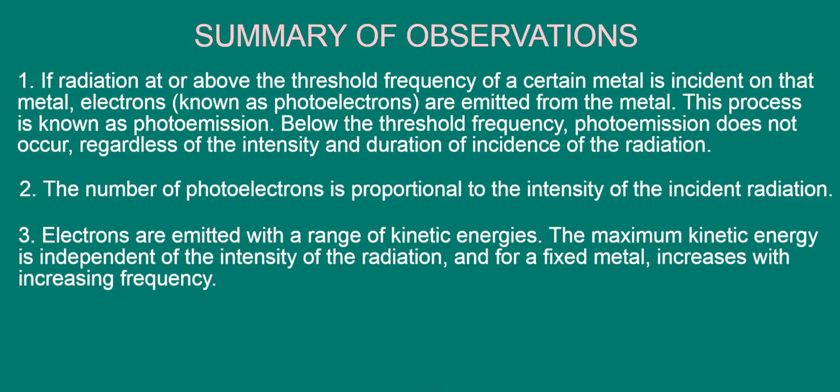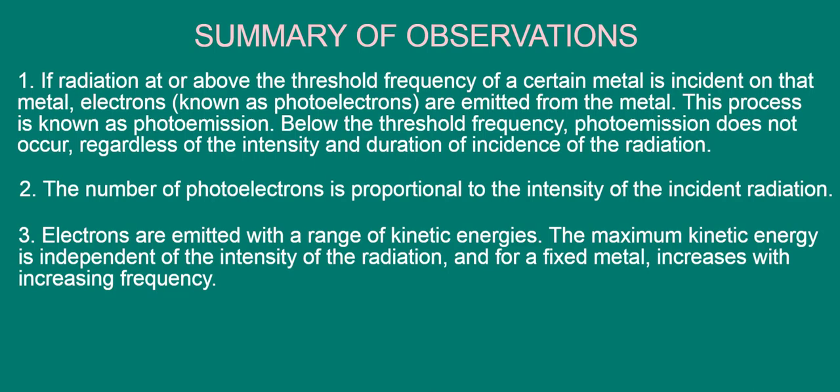Let's now return once more to the simulation. The last puzzling observation to discuss is that if the radiation source is turned on, emission of electrons occurs without delay. Surprisingly, this happens for even the lowest intensities as you just saw. Let's jot this down.